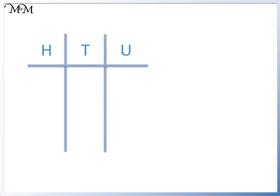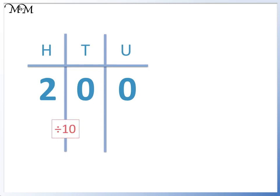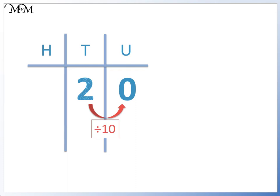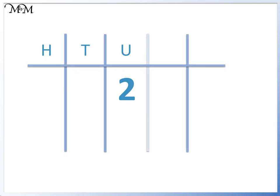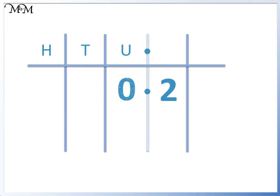Here's another example. This time we'll start with 200. To divide by 10, we move the 2 one place to the right, and we get 20. To divide by 10 again, we move the 2 one place to the right, and we get 2. If we want to divide 2 by 10, we must write in the decimal point. To divide by 10, we move the 2 one place to the right, and we place a 0 in the units column. We have 0.2.